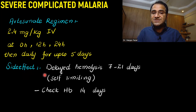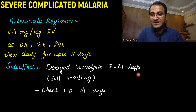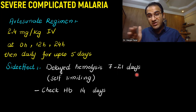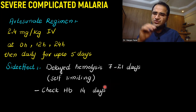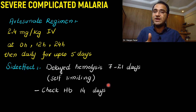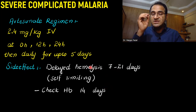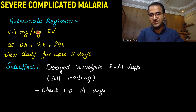Side effects of artesunate regimen include delayed hemolysis occurring at 7 to 21 days, which is normal and self-limiting after treatment. You should check the hemoglobin after 14 days to ensure HB is not dropping due to this side effect of delayed hemolysis after artesunate.